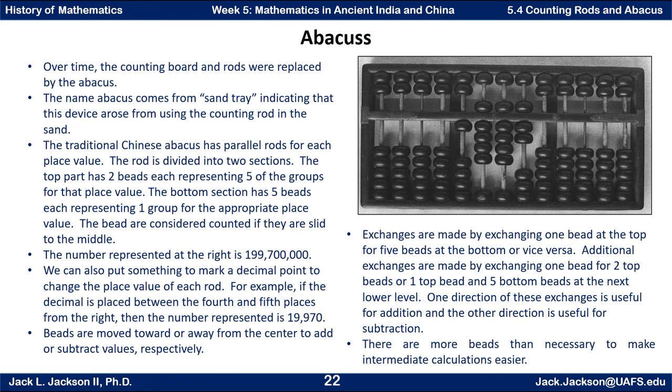We can also use the same thing both in the counting boards and in the abacus to represent decimals. All we have to do is just indicate where the decimal point goes. Like you could put a decimal, some symbol here, you could put something up next to it or just remember it or put a mark on there to represent where the decimal goes. So for example, if the decimal went right here between the fourth and fifth one from the right, then all of these would be zero past the decimal point. And then this would be the same digits, they would just be a different place value. Or if the decimal place was say right here in between these two, this would be 19.97. Just depends on where you put the decimal place.